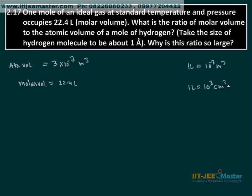And 1 cm³ is 10^-6 m³. And so 1 liter will be written here as 22.4×10^-3 m³.